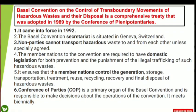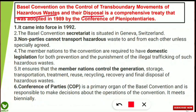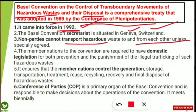The Basel Convention is also called the Basel Convention on the Control of Transboundary Movements of Hazardous Waste and their Disposal. It is a comprehensive treaty adopted in 1989 by the Conference of Plenipotentiaries, but it came into force in 1992 — note down these two different years. Its secretariat is situated in Geneva, Switzerland. Non-parties cannot transport hazardous waste to and from each other unless specially agreed.